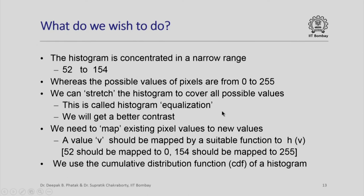What we need to do is: given the pixel values in an image, we calculate the histogram and find a method of mapping an existing pixel value to some new value. A value V should be mapped by a suitable function H(V), so original value V should become H(V). For example, we would like 52 to be mapped to 0, and 154 to be mapped to 255. All the values which are transformed must be transformed in proper harmonious relationship with the entire image, and that is the reason why we use the histogram.